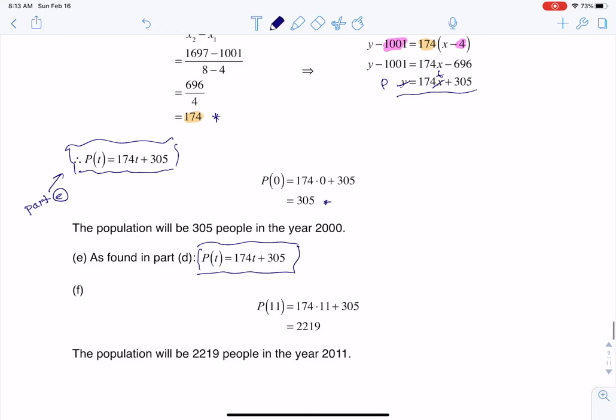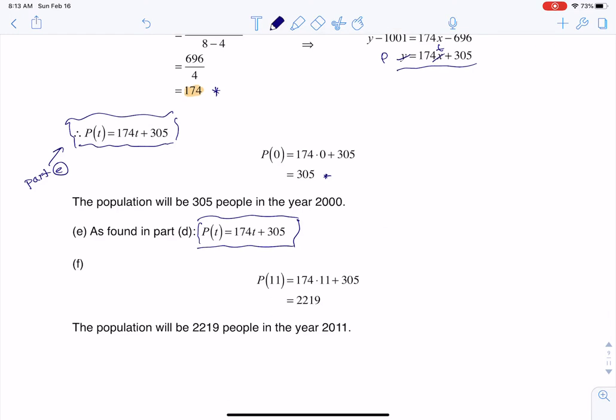Last but not least, it says what's the population in the year 2011? Well, if my year is 2011 and my base year is 2000, to find my T value you always do your current year minus your base year, and in this case it's 11, which is why you see me plugging 11 in. There we go with 2,219, so I think the population will be 2,219 people in the year 2011.